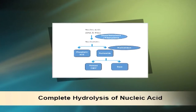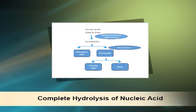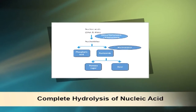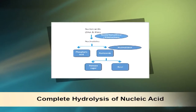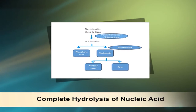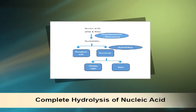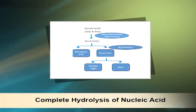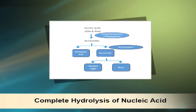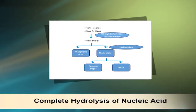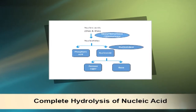The sequence of bases uniquely characterizes a nucleic acid and represents a form of linear information. Nucleotides are the monomeric units of nucleic acids. Nucleic acids are hydrolyzed to nucleotides by deoxyribonuclease or ribonuclease enzyme activity. Each nucleotide is composed of phosphoric acid and a nucleoside, and each nucleoside is composed of pentose sugars and nitrogen bases.